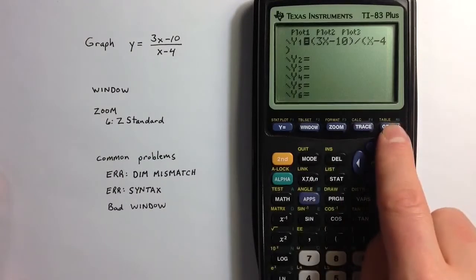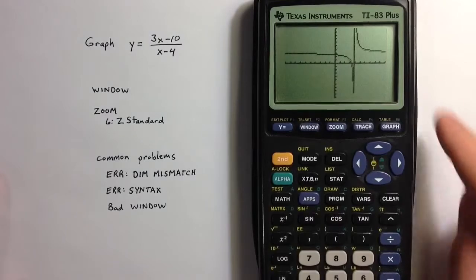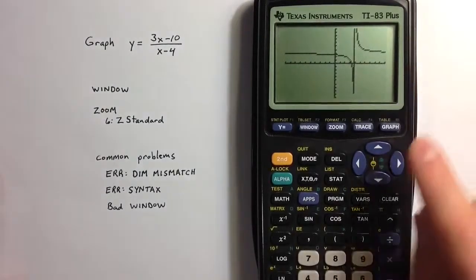If we go to the graph screen, what happens here is that the calculator is trying to connect the dots.